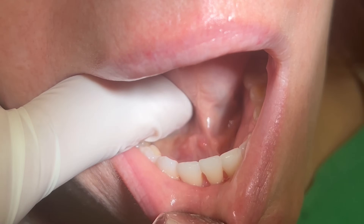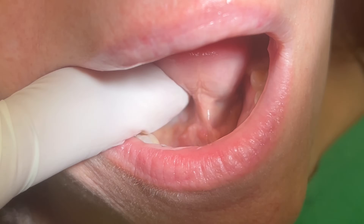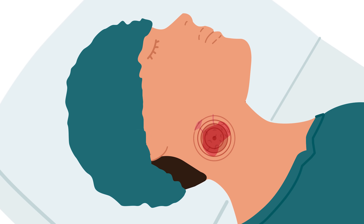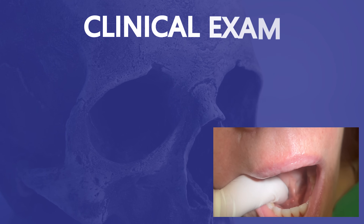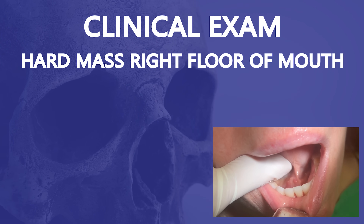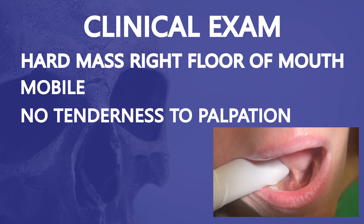On exam, the right floor of the mouth is slightly elevated compared to the left. The salivary duct, Wharton's duct, is patent but there's minimal output. Also, when I stimulate the right submandibular gland, it is tender. The left gland and duct are working normally. I'm also able to feel a hard mass in the right floor of her mouth. It is mobile and non-tender to touch.